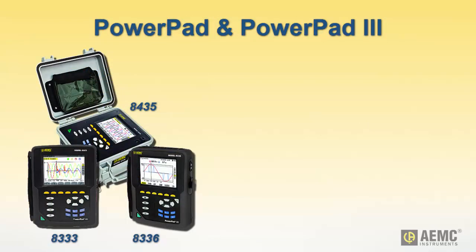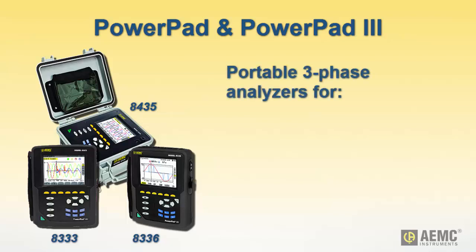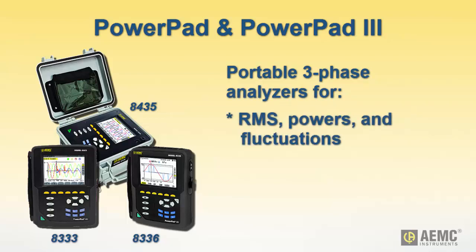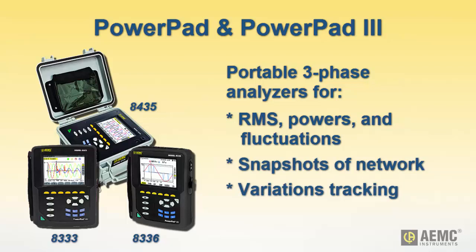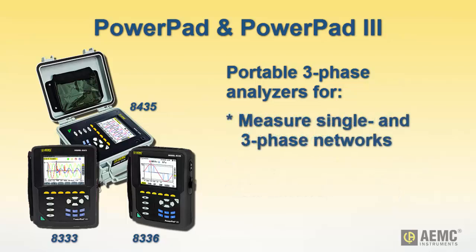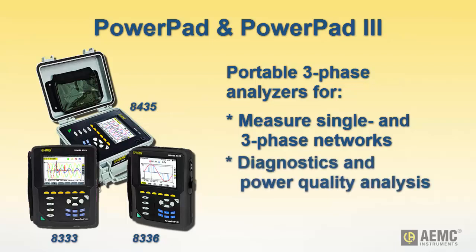The PowerPad family of instruments combines data logging with sophisticated power quality analysis. These instruments are portable three-phase network analyzers designed to measure RMS values, powers, and fluctuations of electrical hookups, deliver a snapshot of the principal characteristics of a three-phase network, and track variations of specified parameters over time. They enable utility company technicians and engineers to measure single and three-phase networks and perform diagnostics and power quality analysis. Trend data can be recorded for days, weeks, or even months, and inrush current can also be captured and stored.